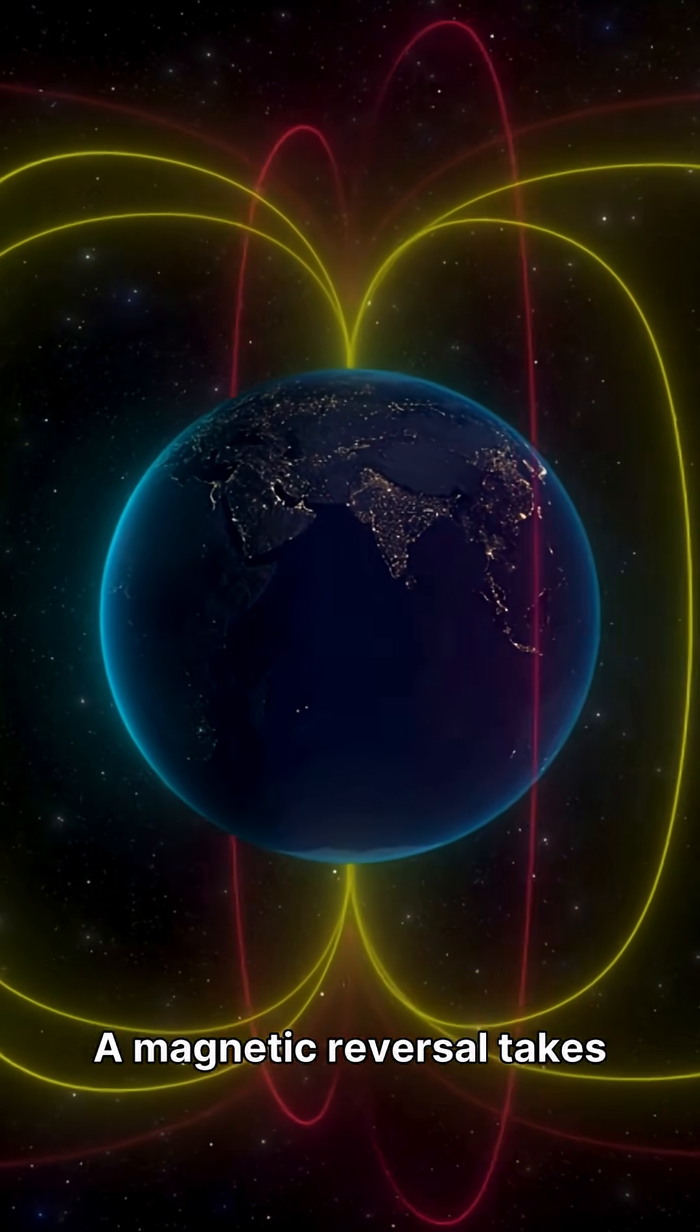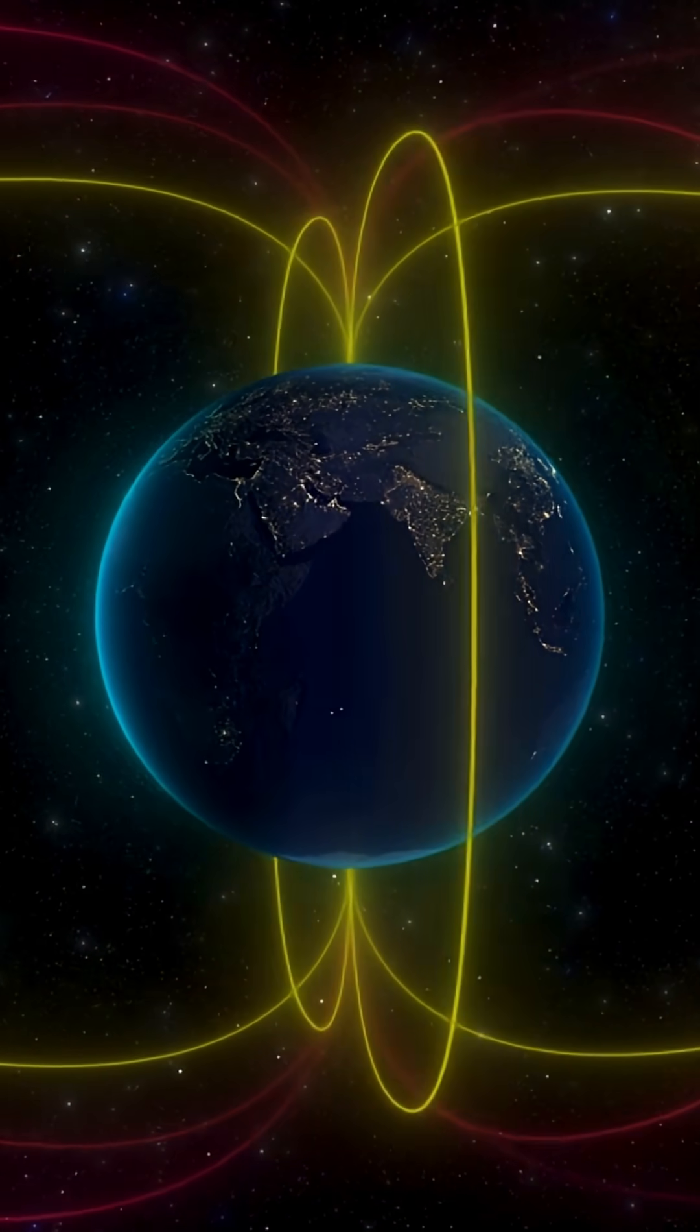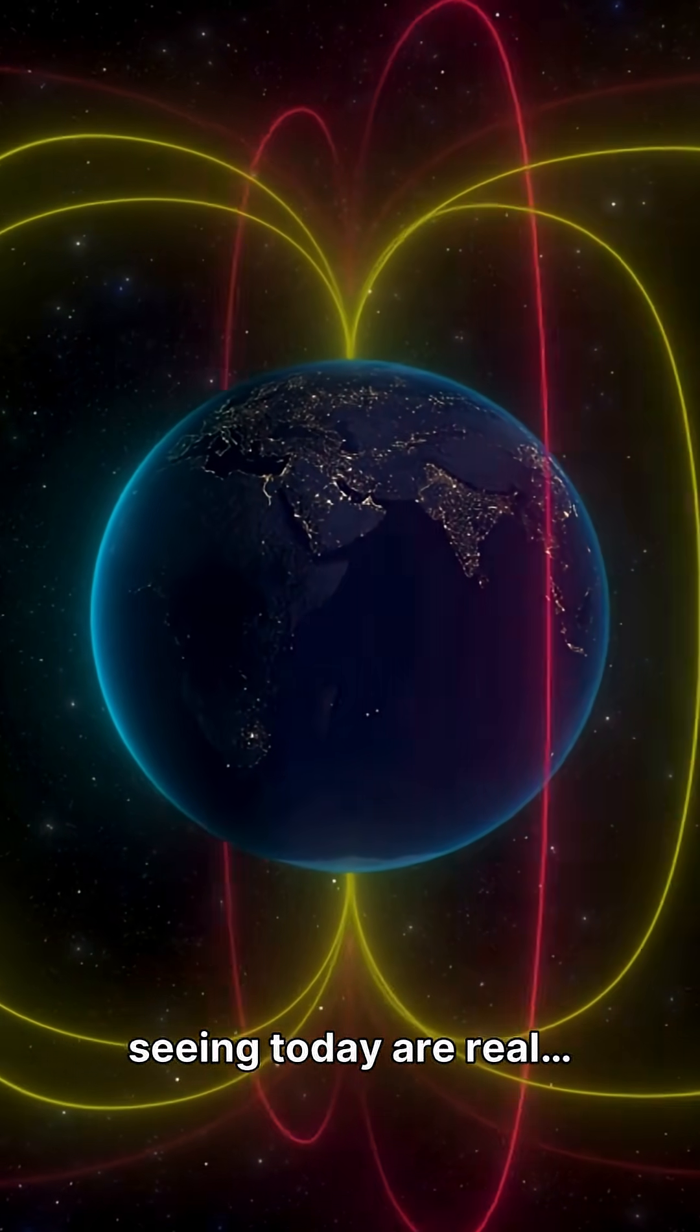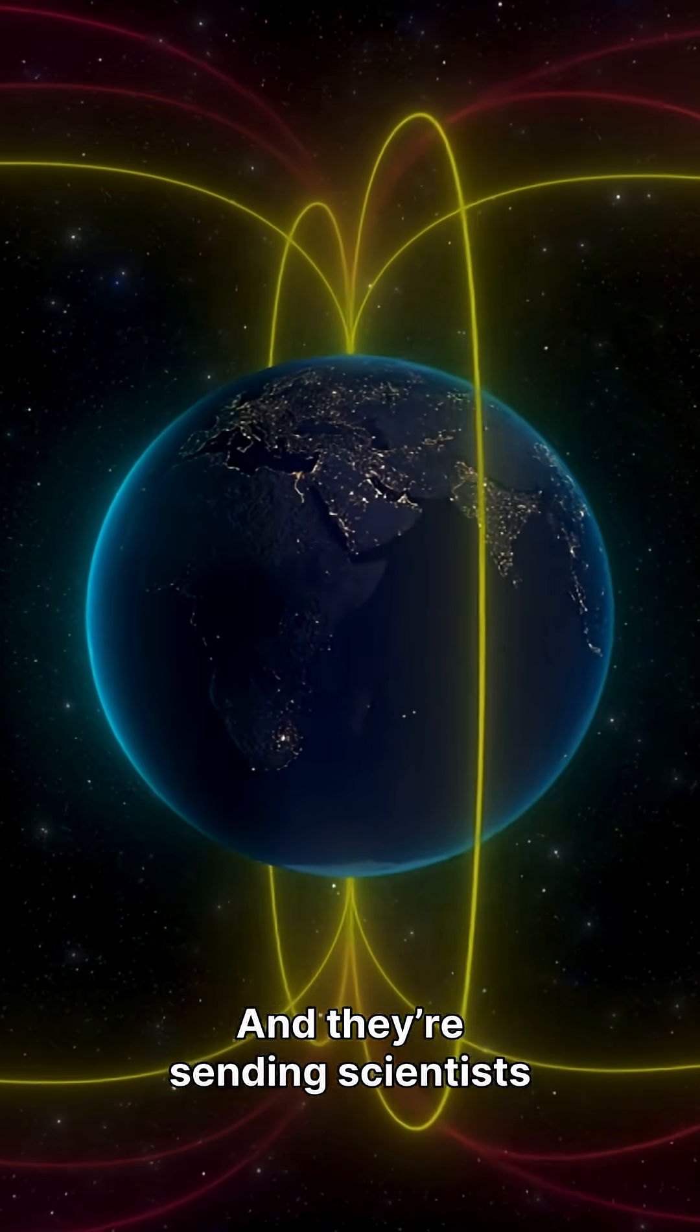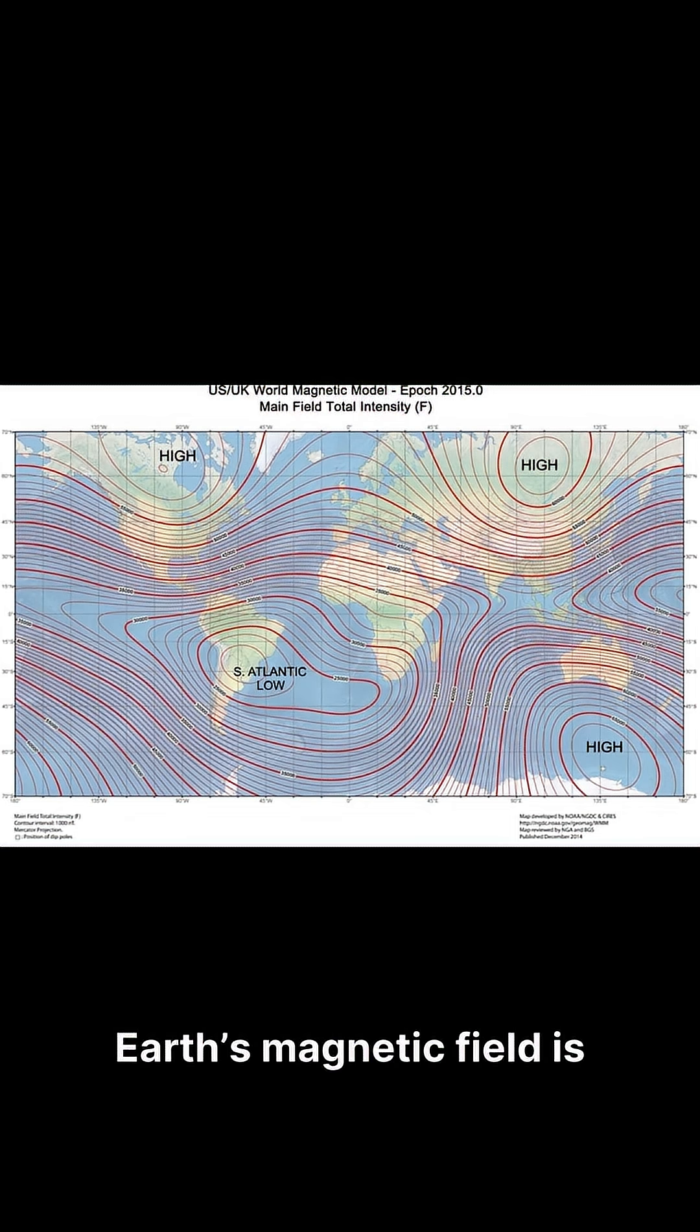A magnetic reversal takes hundreds to thousands of years, but the changes we're seeing today are real and they're sending scientists scrambling for answers. Earth's magnetic field is fading, but understanding it is our first line of defense.